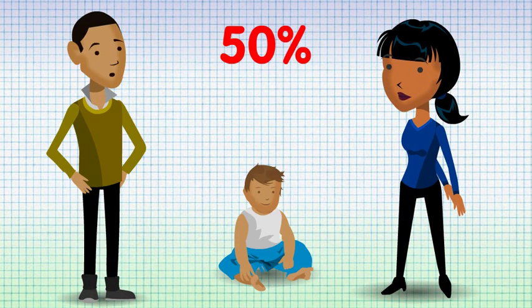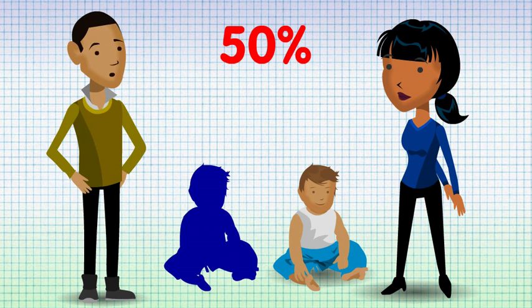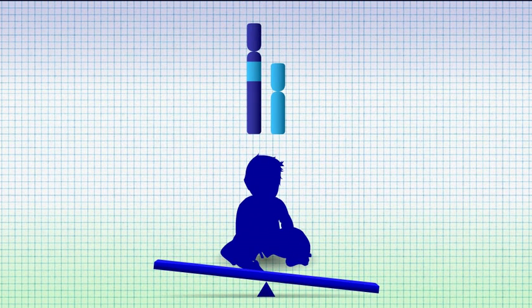Overall, there is a 50% or 1 in 2 risk that a parent would have a child with an unbalanced form of the translocation.